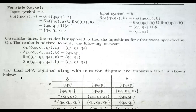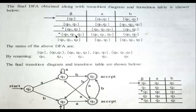We now draw the transition table with all five states. We rename them: Q0 stays Q0, {Q0,Q1} → Q1, {Q0,Q3} → Q2, {Q0,Q2,Q3} → Q3, {Q0,Q1,Q4} → Q4. Based on this renaming, the final transition table is generated and the DFA diagram is drawn.